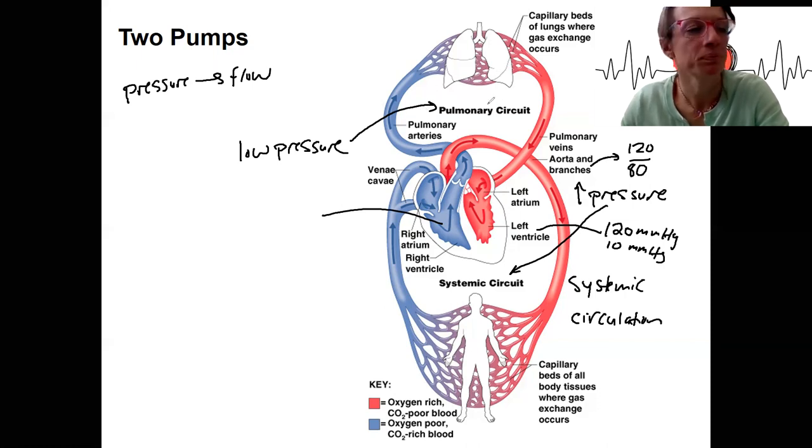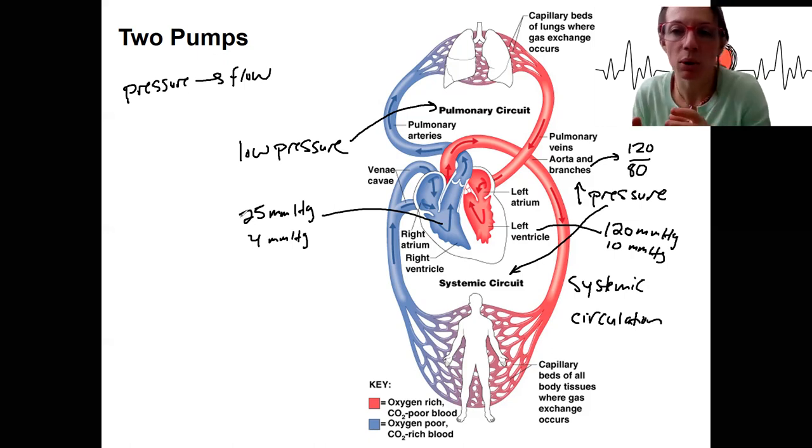So it's not going to generate that same pressure. It's going to be about 25 millimeters of mercury at contraction, so in systole, and go down to about 4 millimeters of mercury. So quite a bit lower, even though the same blood is going through there. You don't need to squeeze quite as hard, you don't need to generate the same pressure to have flow through the entire circuit.